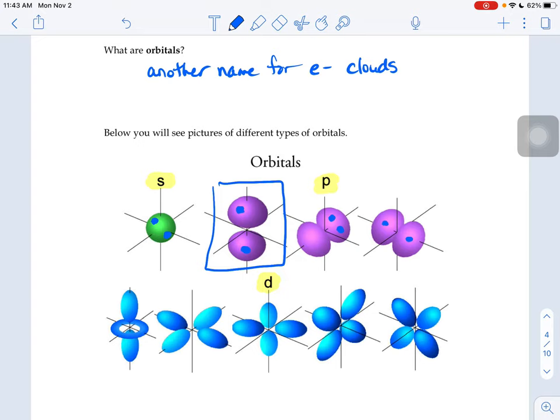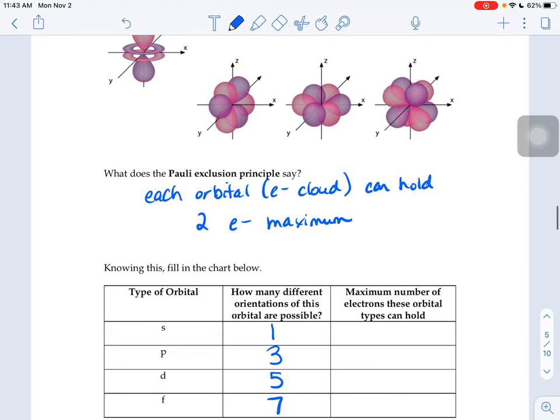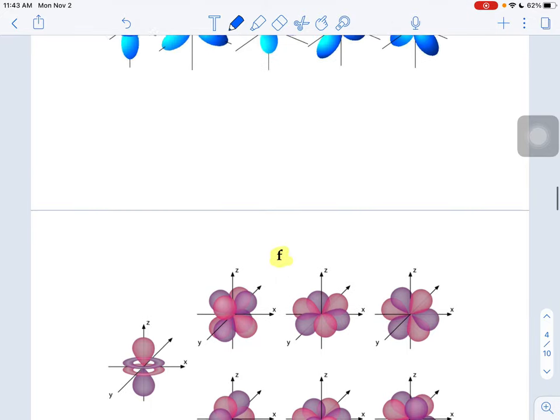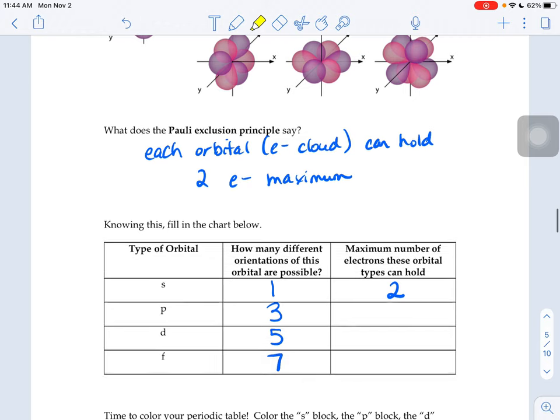So if we could fit two into the S's, then that means the most that can fit in an S-shaped cloud are two. Then if you look at the P-shaped clouds, there's three different orientations of them. So we could fit up to six. One, two, three, four, five, six. If each cloud can hold two, this guy could hold six, this guy can hold 10, two in each of those five clouds, and then this guy 14.